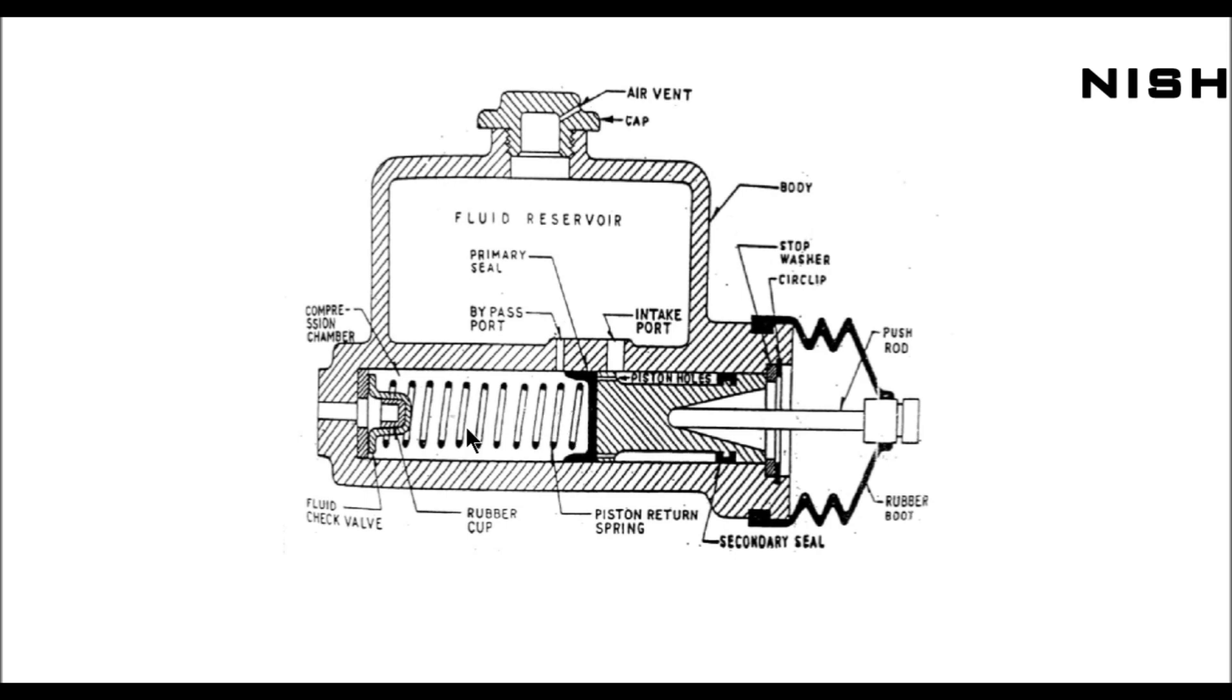Due to the piston movement to the left, the bypass port is closed so fluid doesn't go to the fluid reservoir. Fluid is compressed in the compression chamber. When a certain amount of pressure is reached, the fluid check valve opens and fluid goes to the brake line.